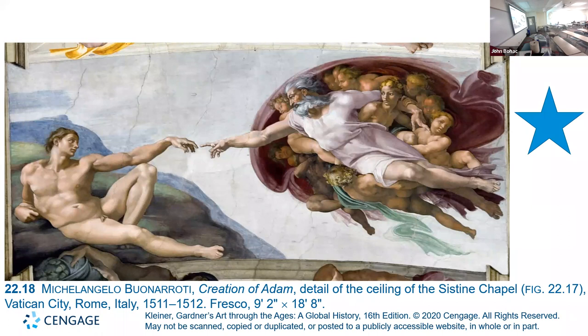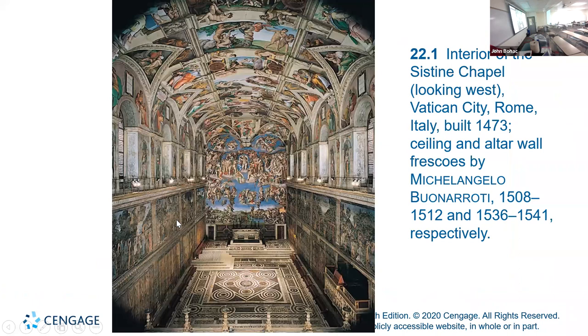Michelangelo didn't want to do it. With a bunch of great painters available, let Raphael do this — he said he wasn't a painter. Pope Julius told him, 'I am the Pope, and you're going to do this.' Period. It took him a long time — like four years or so — to complete this, and it was quite an undertaking. Look at how high up this is.